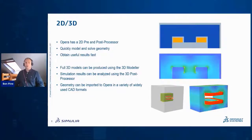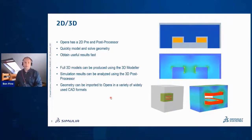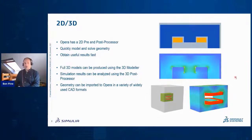You can extrude the 2D model to make a full H-core dipole, which you can then analyze in the 3D post-processor. Opera can import geometry in a wide variety of formats, including from CST and other Dassault Systèmes tools.